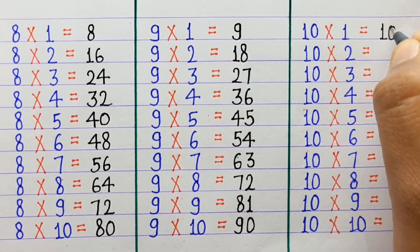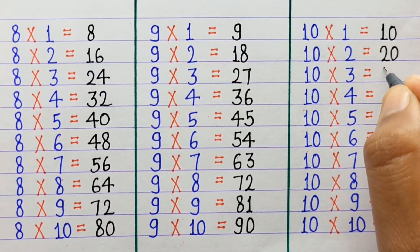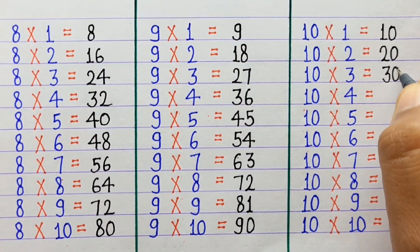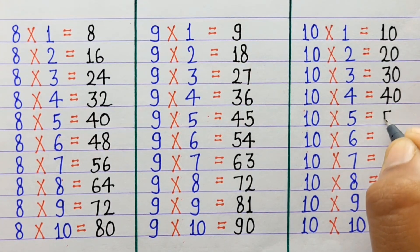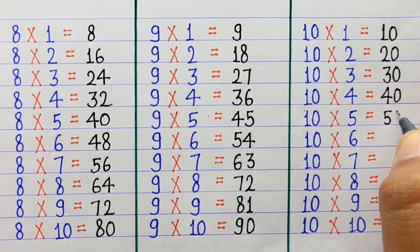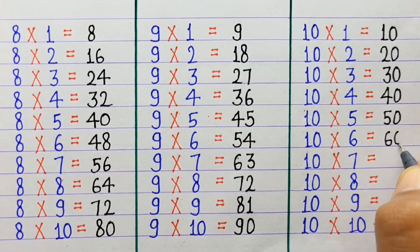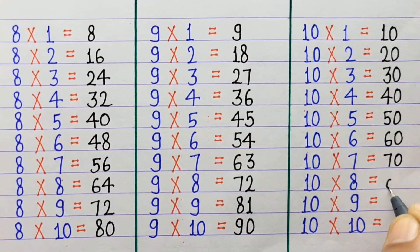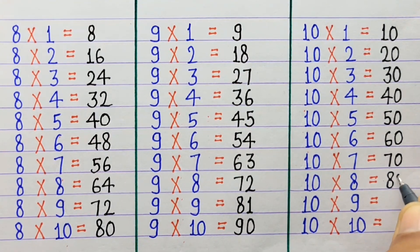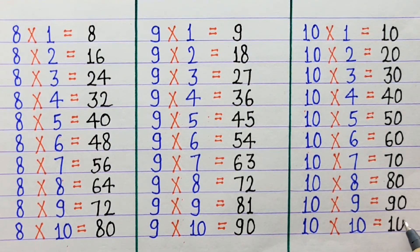10×1=10, 10×2=20, 10×3=30, 10×4=40, 10×5=50, 10×6=60, 10×7=70, 10×8=80, 10×9=90, 10×10=100.